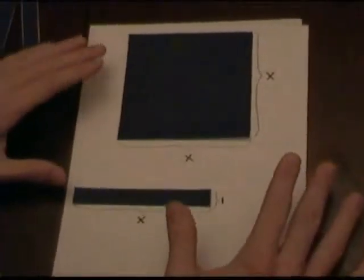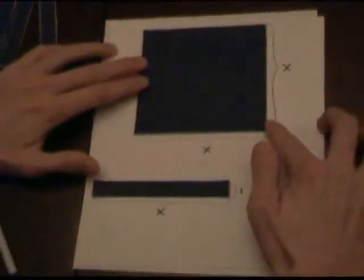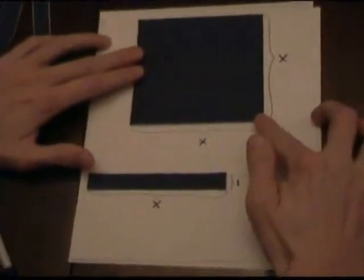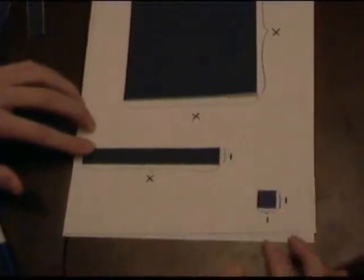Now, these are our algebra tiles here. The big one we'll call having an area of x by x. The skinny one has an area of 1 by x, and the small one has an area of 1 by 1, and we are going to use them to model the binomial expansion of x plus 3 times x plus 1.